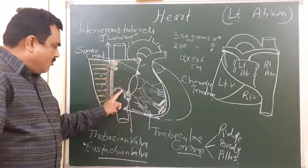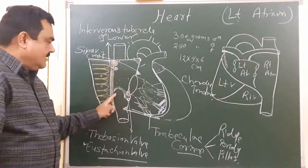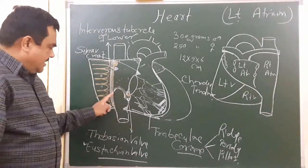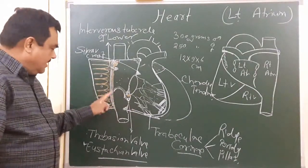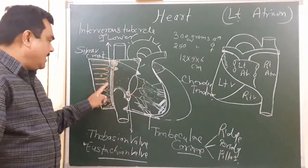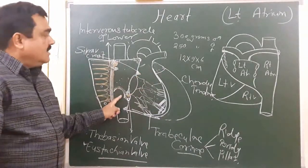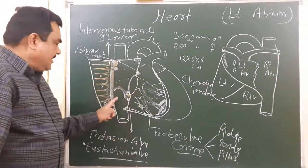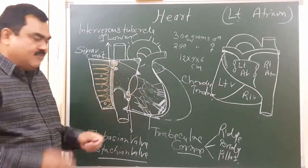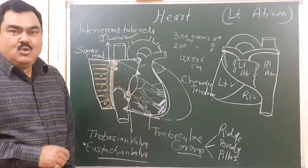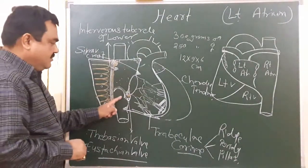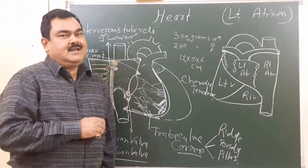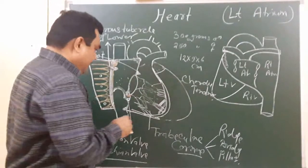Here is the fossa ovalis. If you see from the opening of the right atrium, you see the fossa ovalis. If you see from the opening of the left atrium, at the site of fossa ovalis there is a bulging known as fossa lunata.